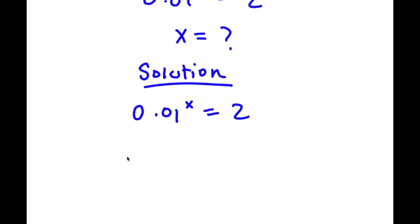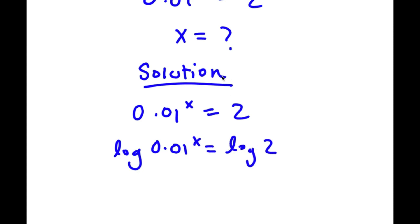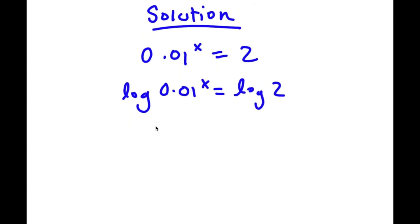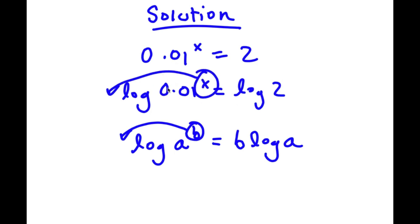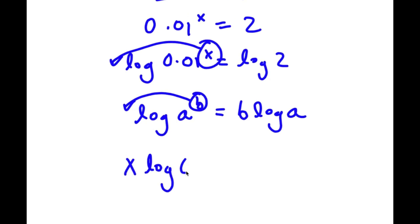Now I'm going to take the log on both sides. So now I have log 0.01 to the power of x is equal to log 2. Now, if I have something in the form log a to the power of b, I can simply move this exponent b to the front. So this would equal b times log a. So in this case, I can simply move x to the front, so that's going to equal x times log 0.01 is equal to log 2.